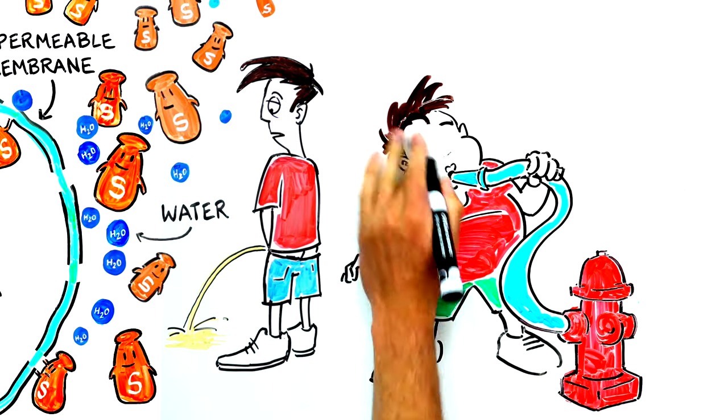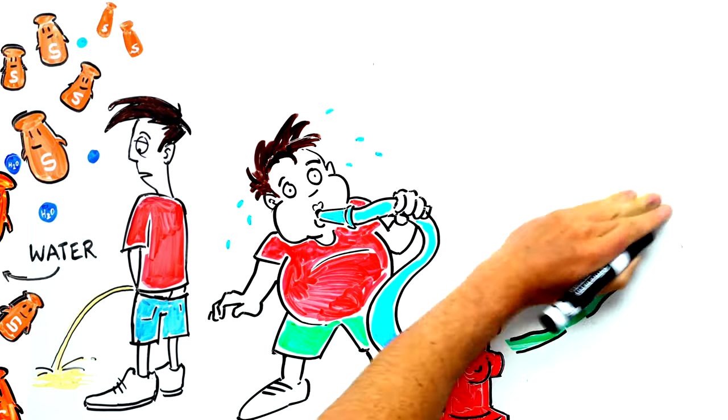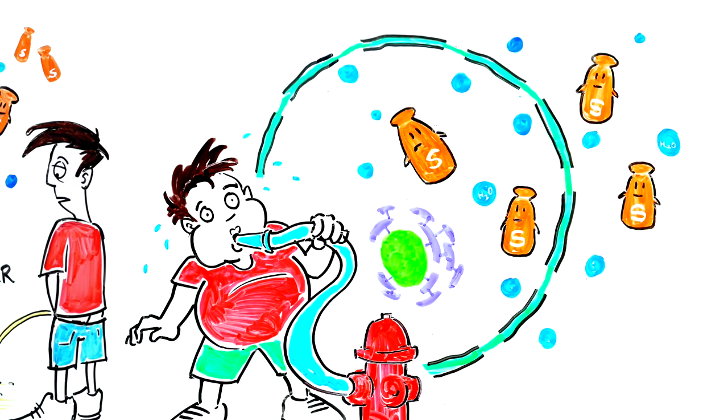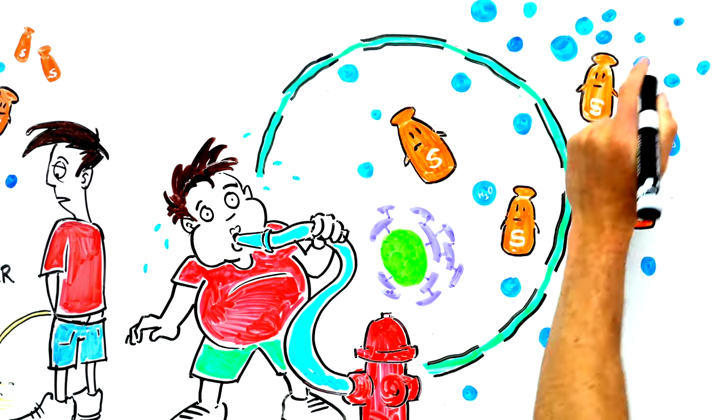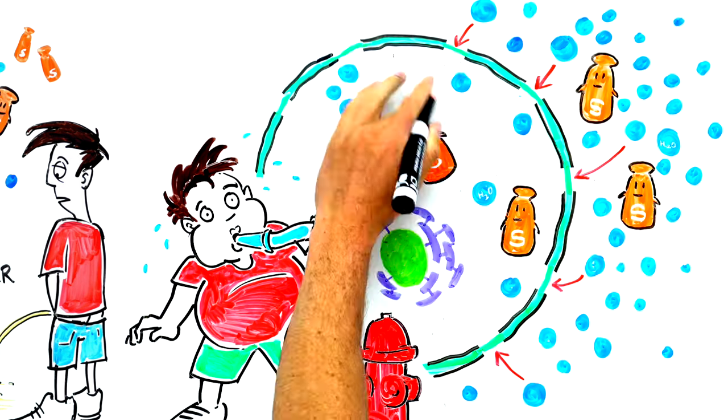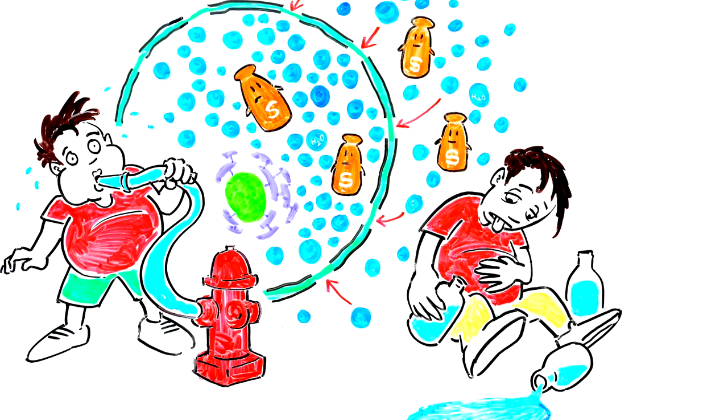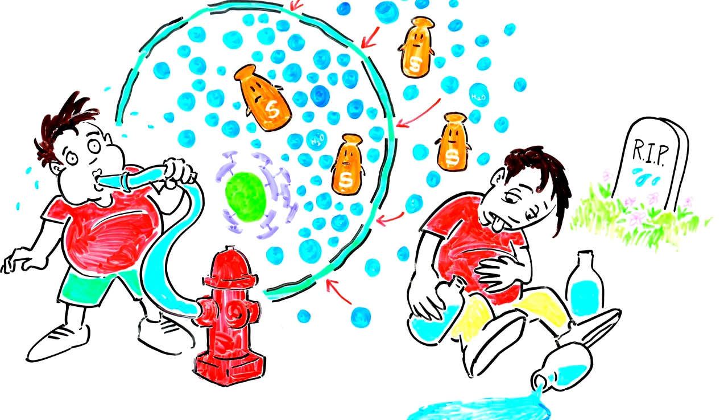Conversely, if you chug a massive amount of pure water, the exact opposite will happen. The saltiness outside your cells will decrease rapidly, and water will be forced into your cells. This can cause cells to swell and burst, which in extreme cases leads to seizures, coma, and sometimes death.